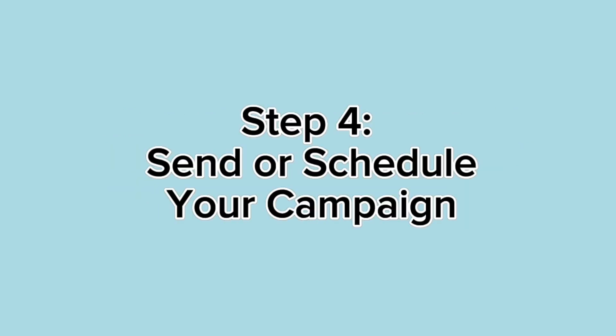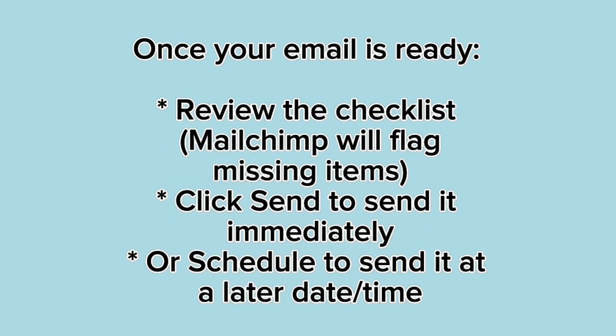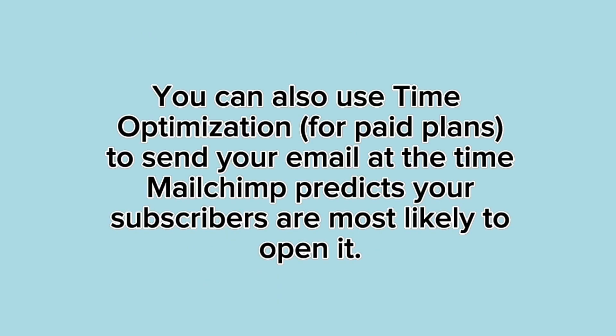Step 4: Send or schedule your campaign. Once your email is ready, review the checklist — Mailchimp will flag any missing items. Click 'Send' to send it immediately, or 'Schedule' to send it at a later date and time. You can also use time optimization on paid plans, where Mailchimp predicts the time your subscribers are most likely to open it.